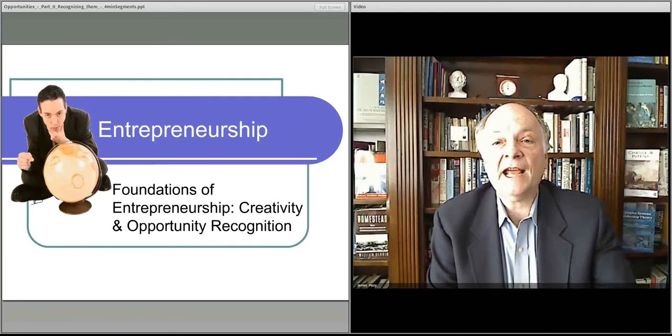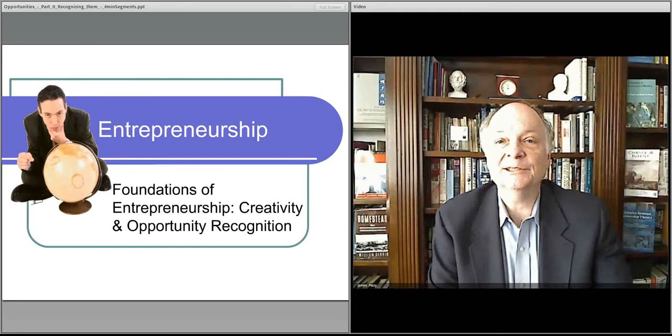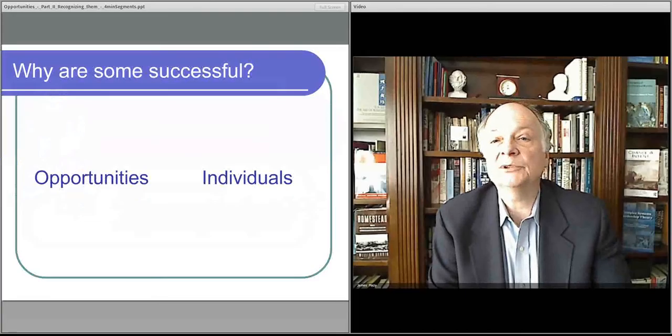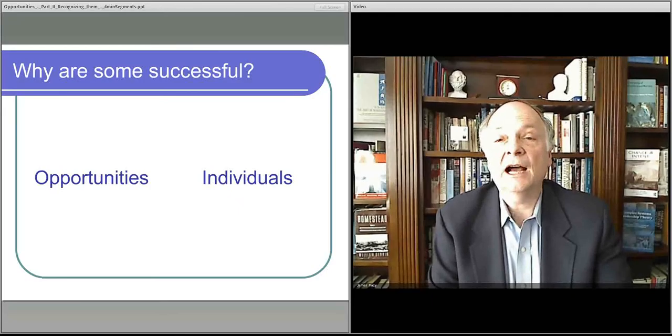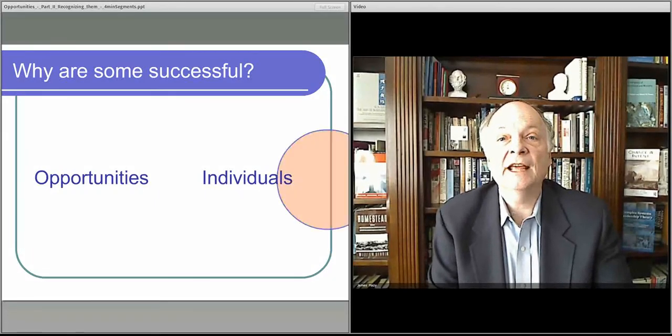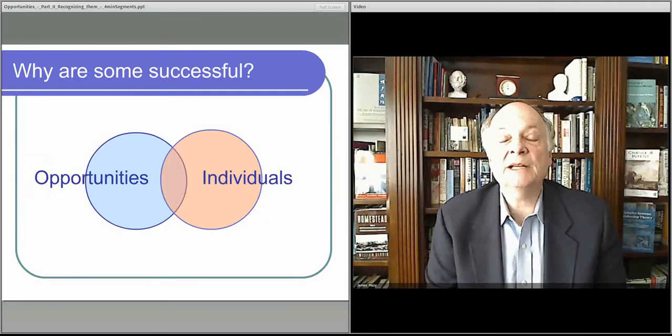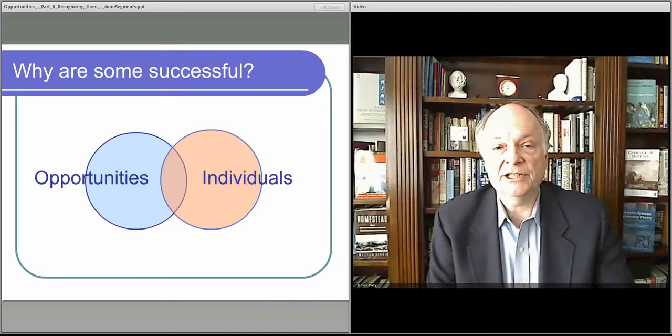That's the second half of entrepreneurial opportunities when you think about it. The first thing is you have opportunities themselves, but then there are people, individuals in the organization or just out there in the marketplace that have initiative, and they come together. There's an overlap when an opportunity meets the kind of individual or group of individuals that want to take advantage of it.